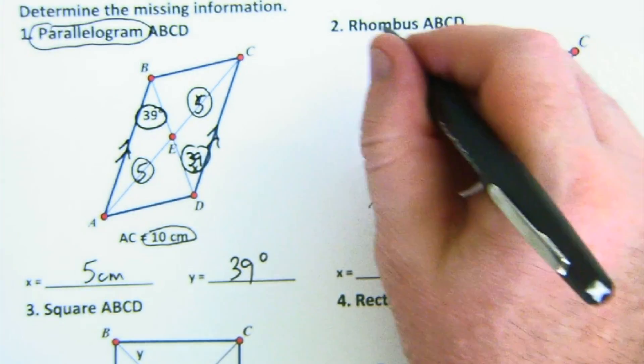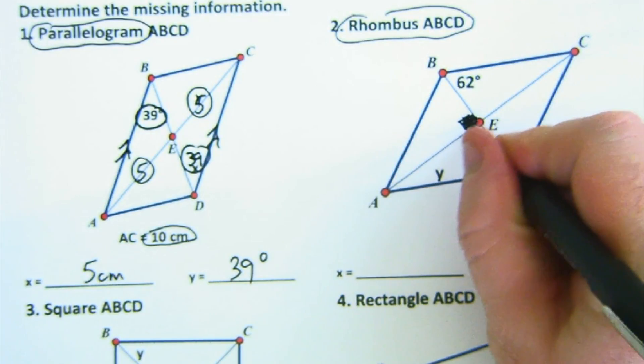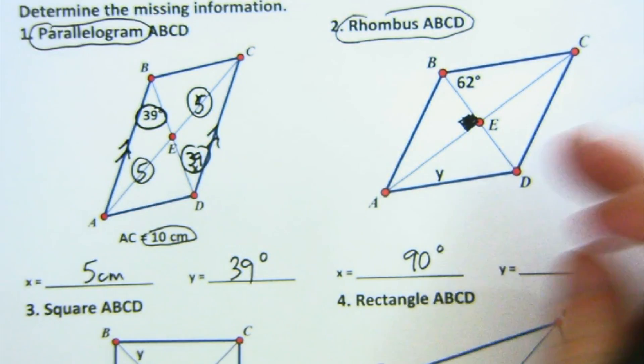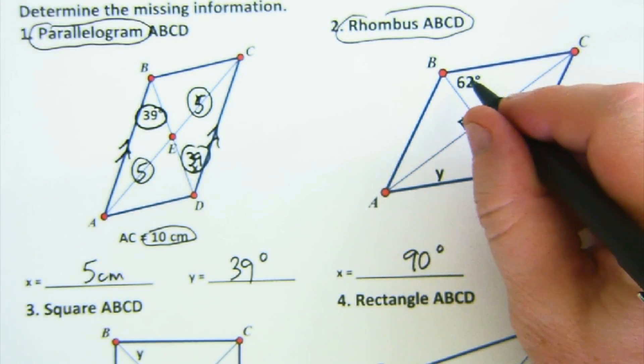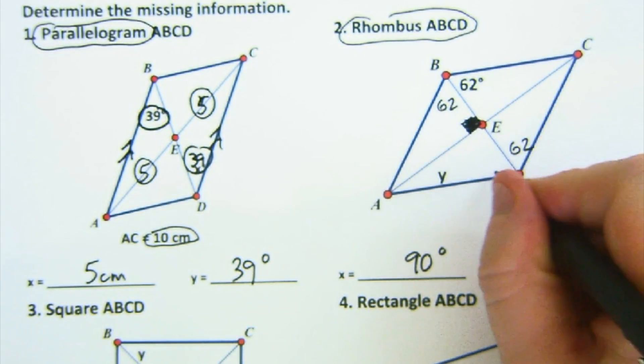Here, because it's a rhombus, I know that the diagonals intersect at 90, so that x has to be a 90 degree. I also know, this one's a little trickier, that angle bisectors take place so these have to be equal and bisected.